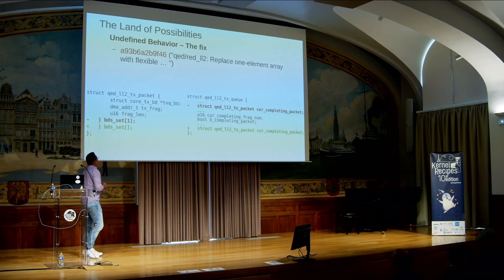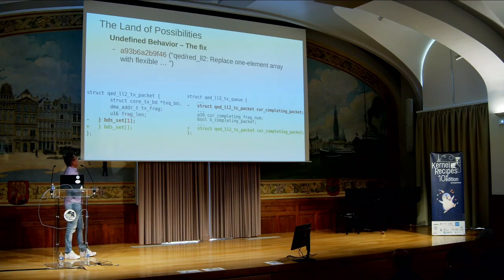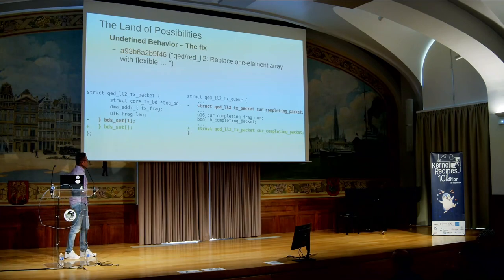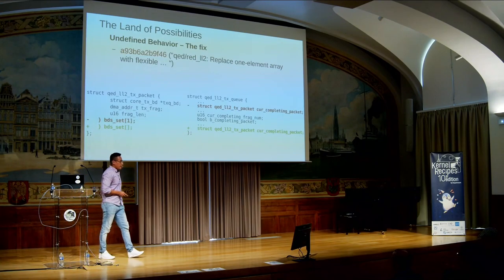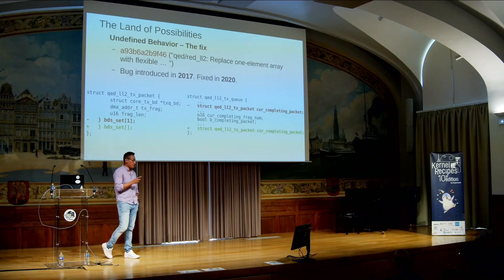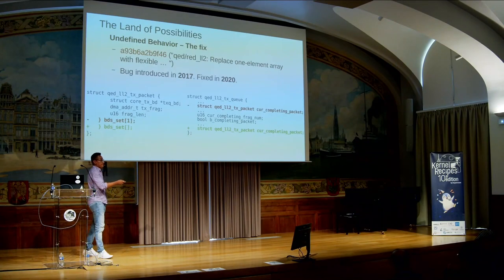The fix is simple: transform the one-element array into a flexible array member and move the object to the bottom of that structure. By doing that, the flexible array member is always going to end at the bottom of any other structure. I sent a patch for this — it was introduced in 2017 and was fixed three years later.